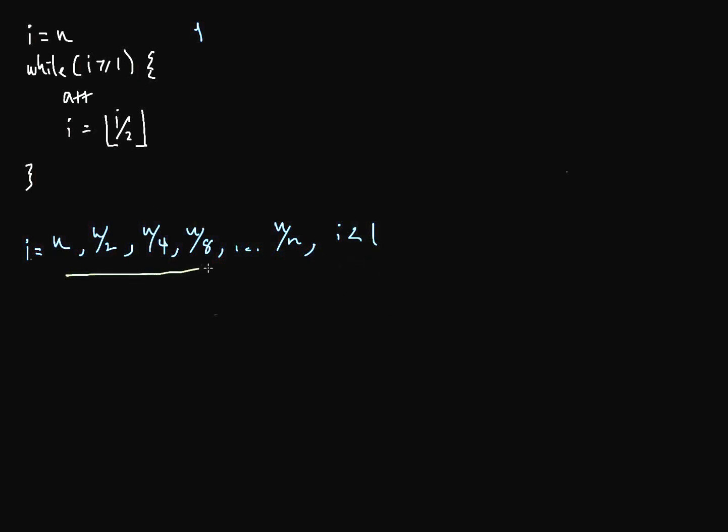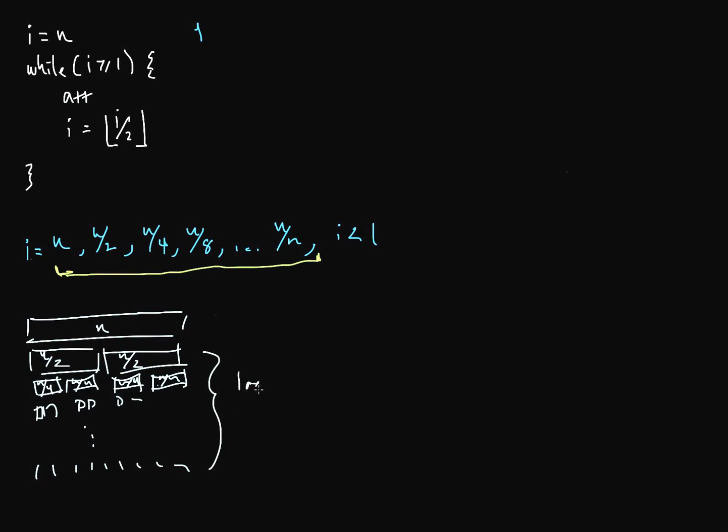And somehow, we have to count how many times we divided by n. And so a little trick is to use logarithms, but we're just going to visualize it here. If we have n, and we continually divide by 2, we end up with kind of a binary tree structure, if you've seen this before.